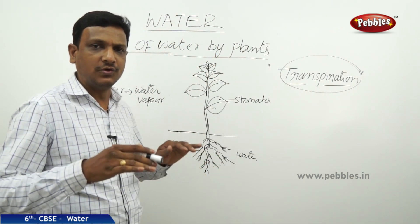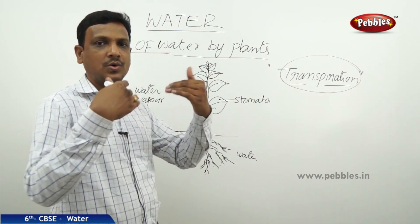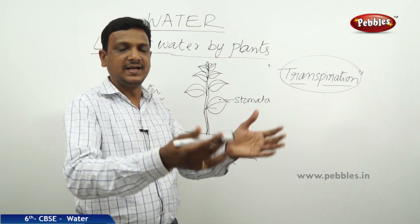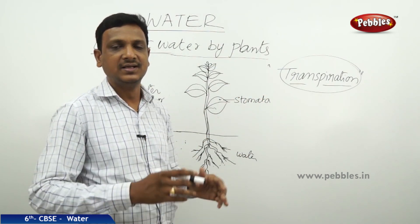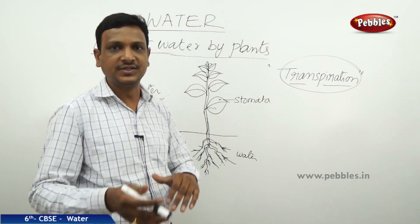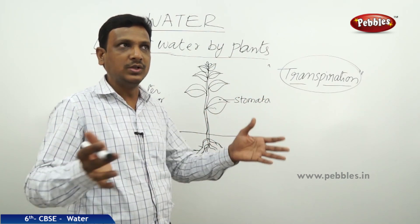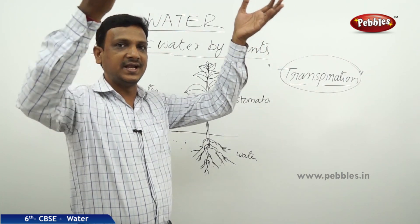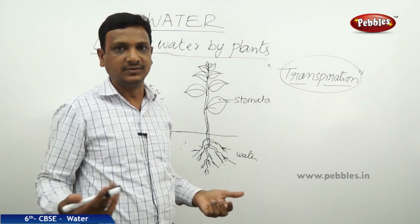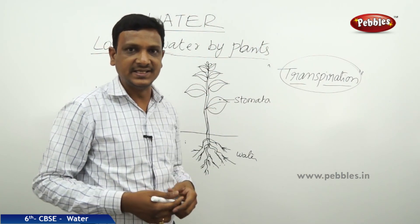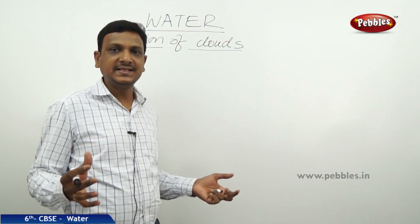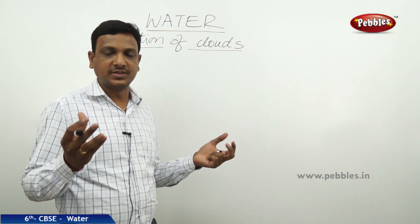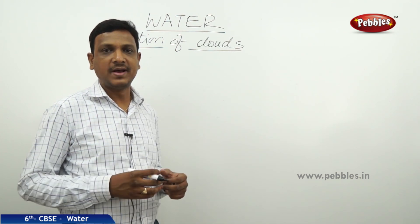So we have seen how water is turned to water vapour. Now let us see the second half of the cycle — how water vapour is again turned back to water. The air is carrying water in the form of water vapour.